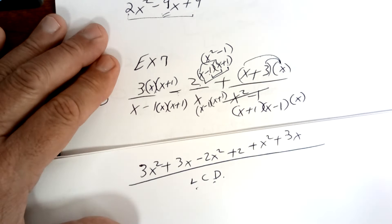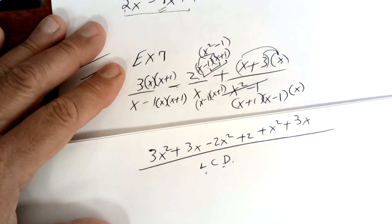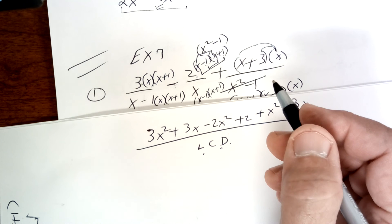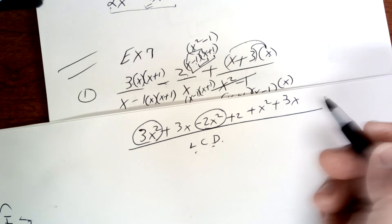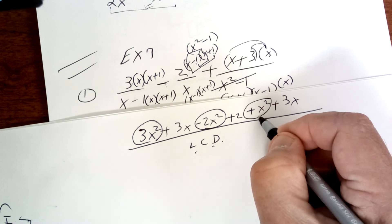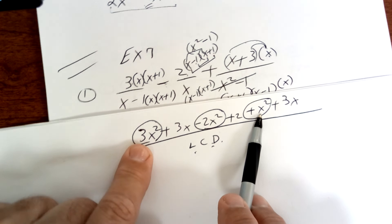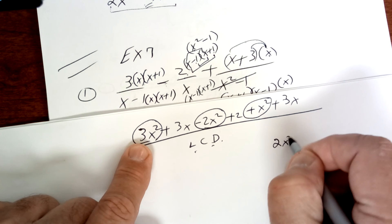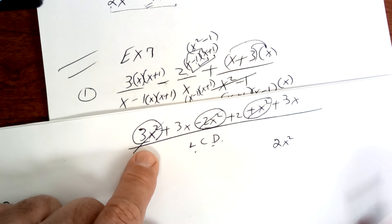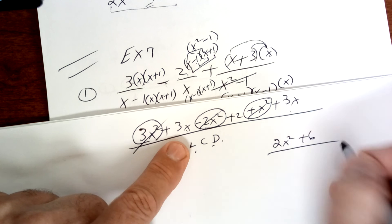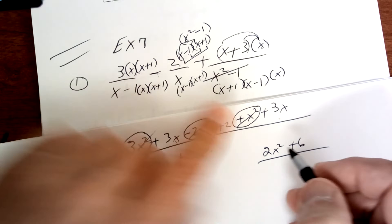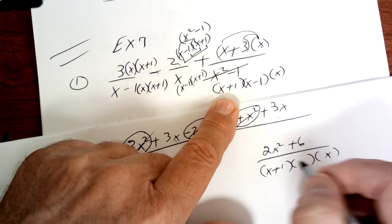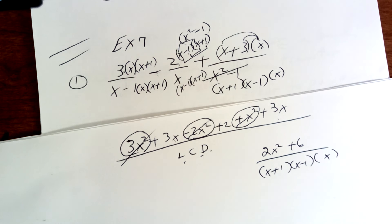Then you distribute to get x² + 3x, all over your least common denominator which is all three factors. Once you get to that point you add your like terms. This x² term and this one are like terms, giving you 4x² − 2x² = 2x². The x² terms cancel and then adding the x terms gives you 2x² + 6x, all over your least common denominator of x(x + 1)(x − 1).